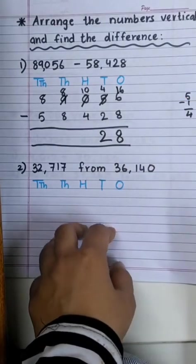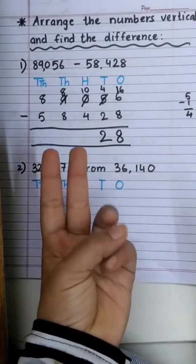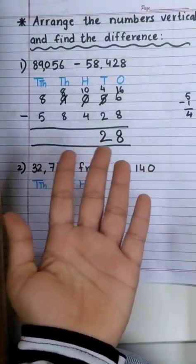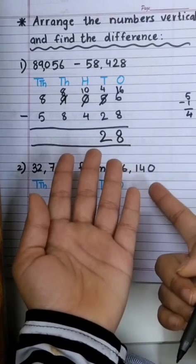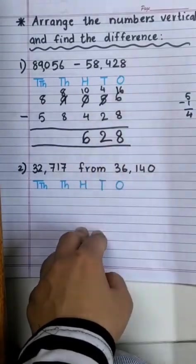Now, 10 minus 4. Let's start counting after 4: 5, 6, 7, 8, 9, 10. How many? 6 remains.